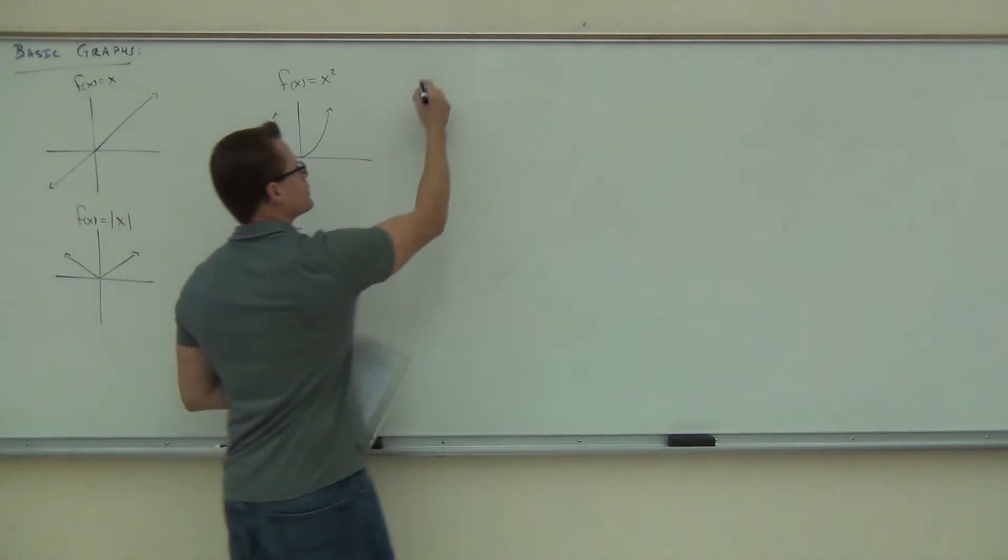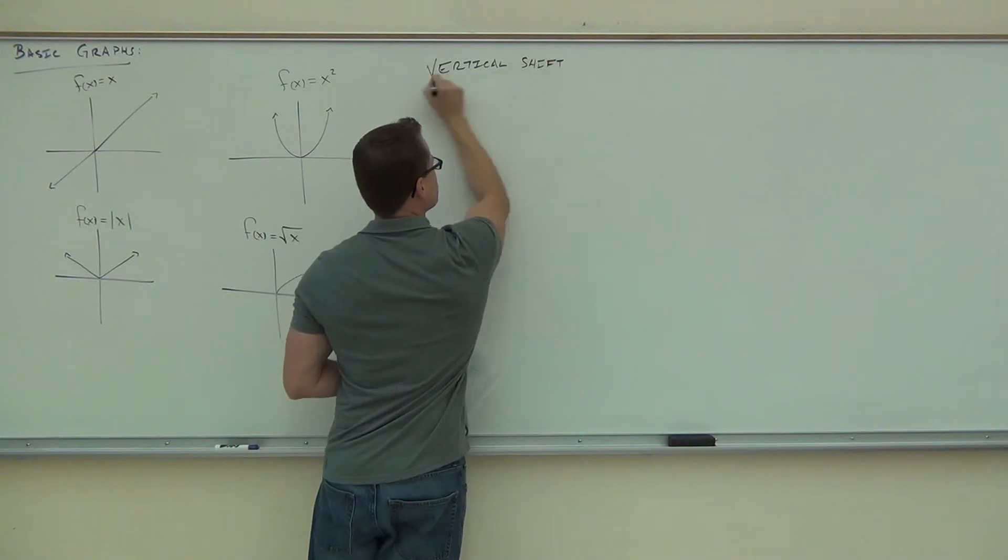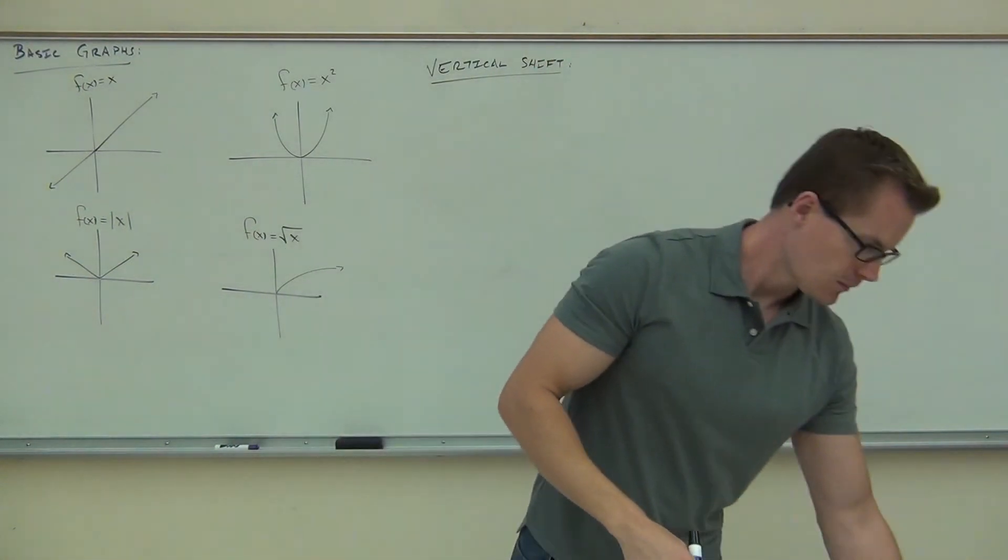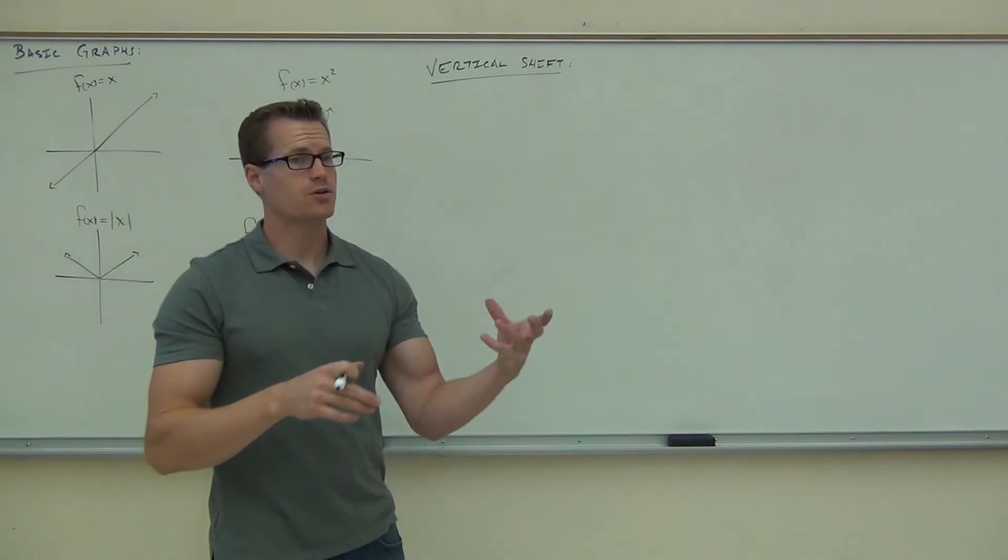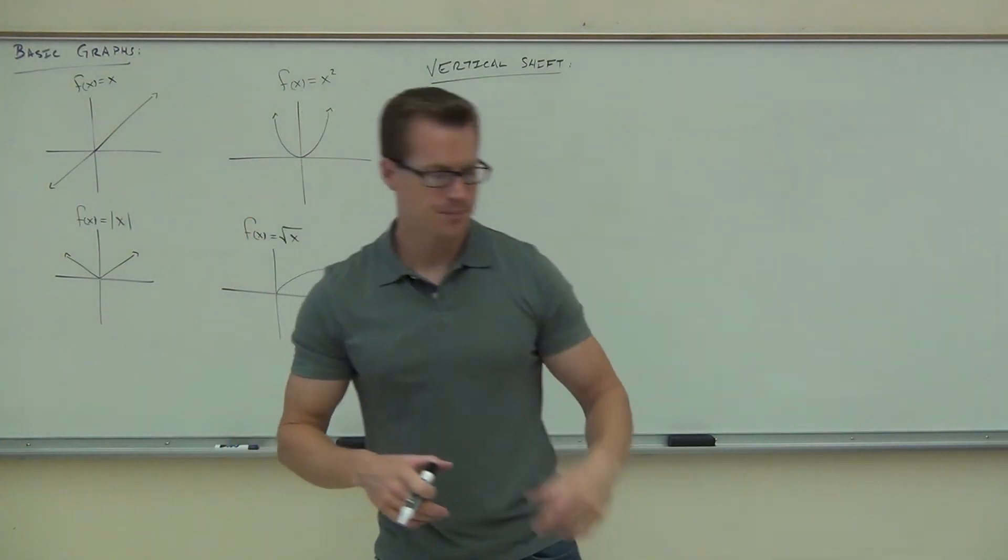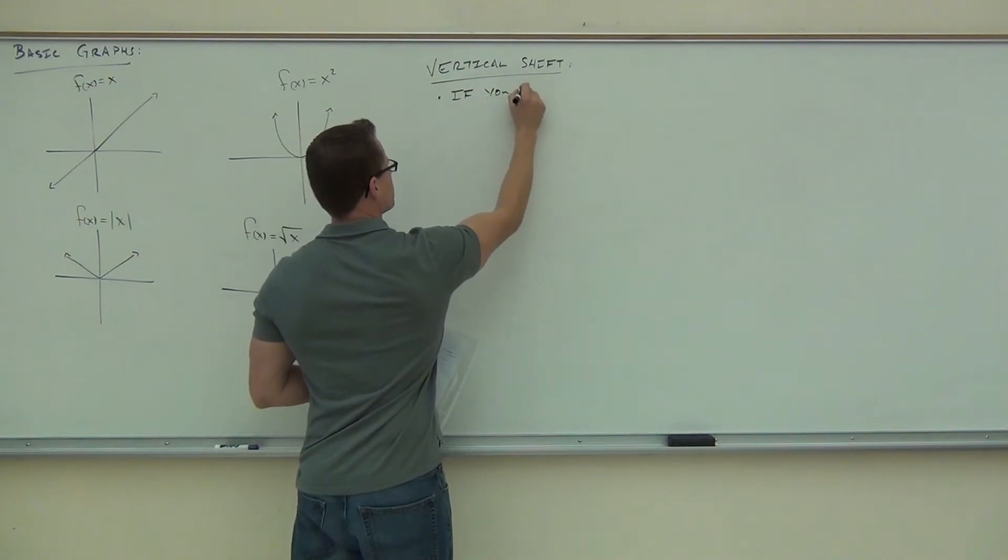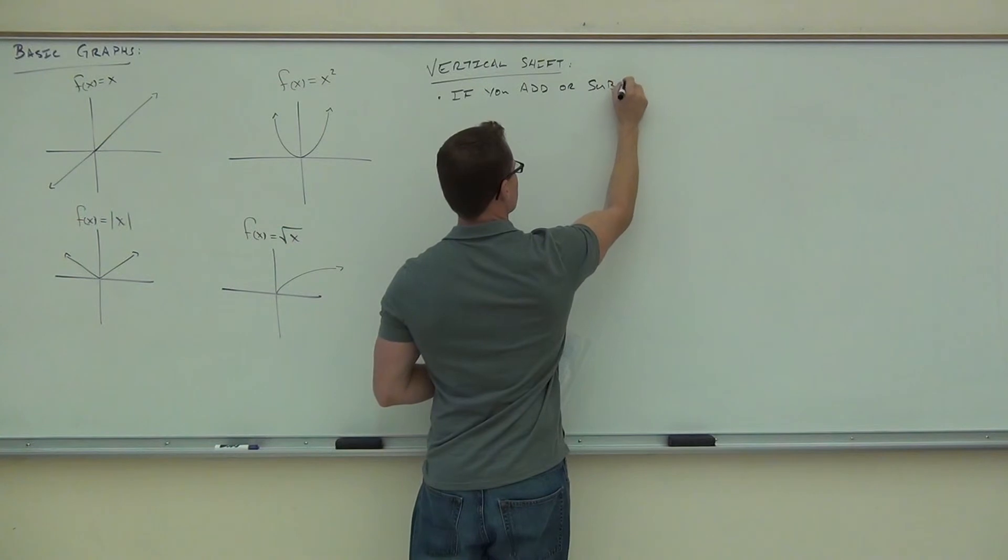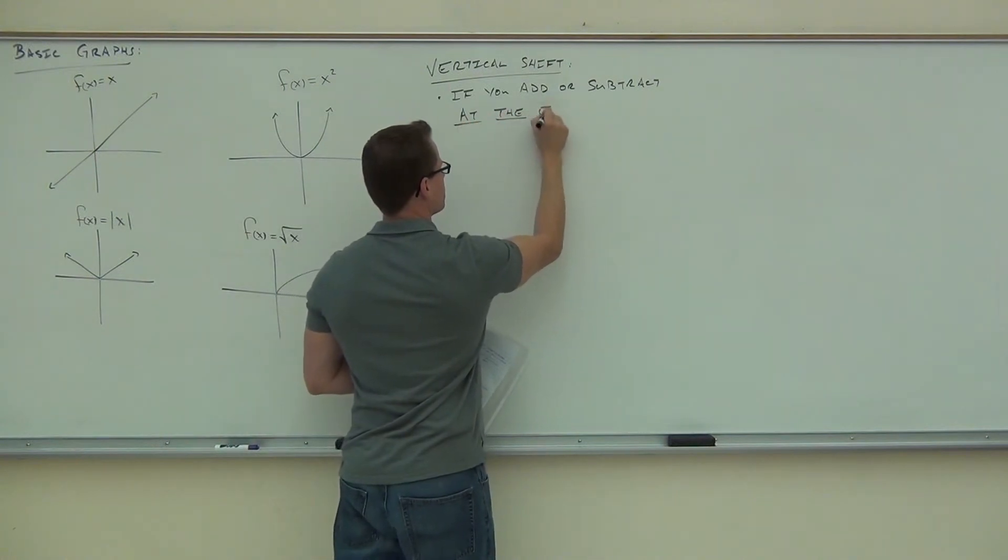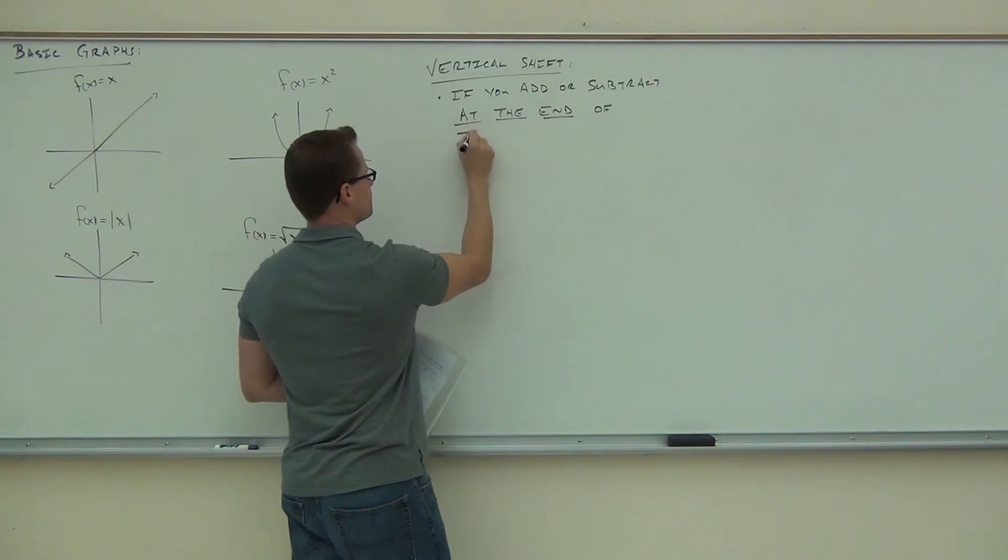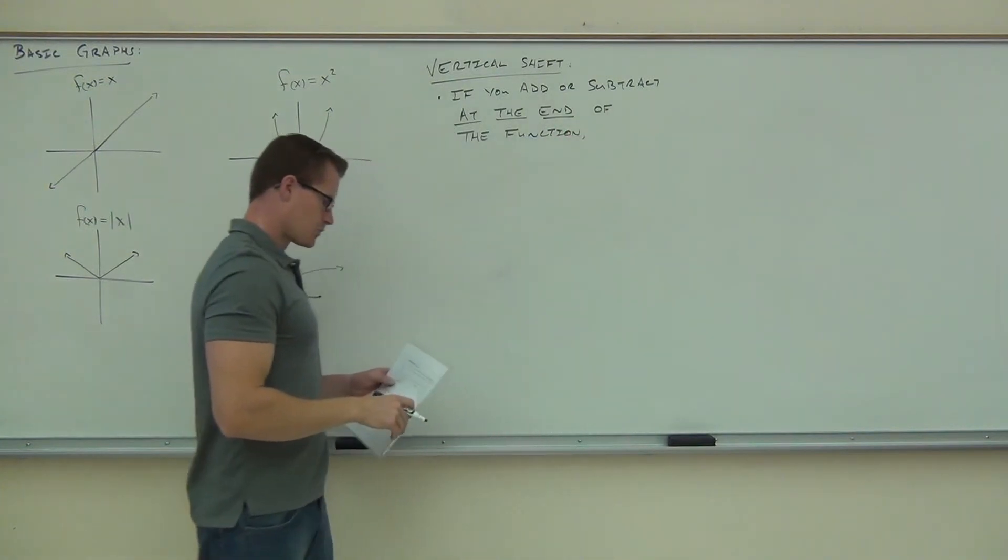If you add or subtract a number at the end of your function, what that's going to do is shift our graph vertically, either up or down. It will shift up or down.